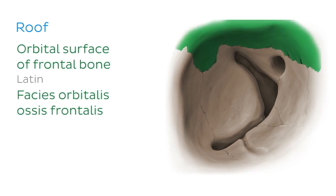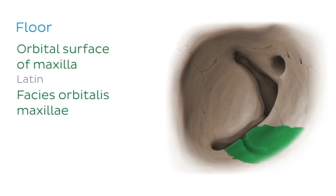The roof of the orbit is made up of the orbital surface of the frontal bone and in turn the floor of the orbit is formed by the orbital surface of the maxilla. Within the maxilla, we can see the infraorbital groove, which transmits the infraorbital vessels and nerve.